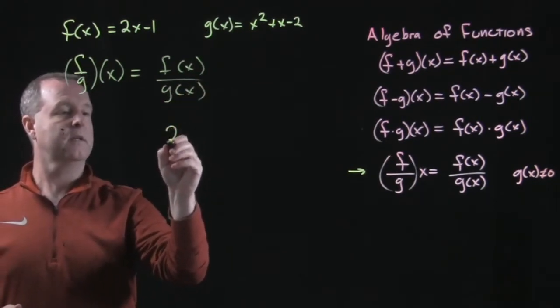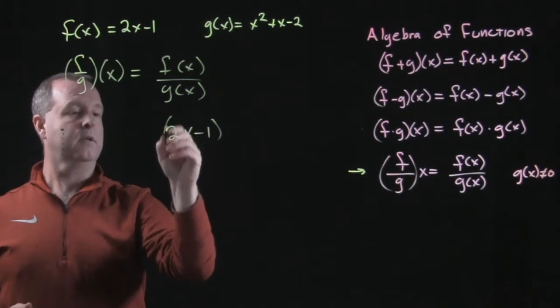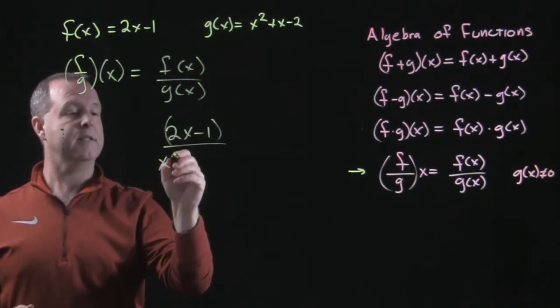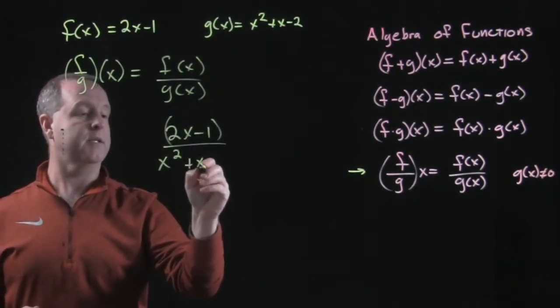Look at my functions. 2x minus 1 is f of x, g of x is x squared plus x minus 2.